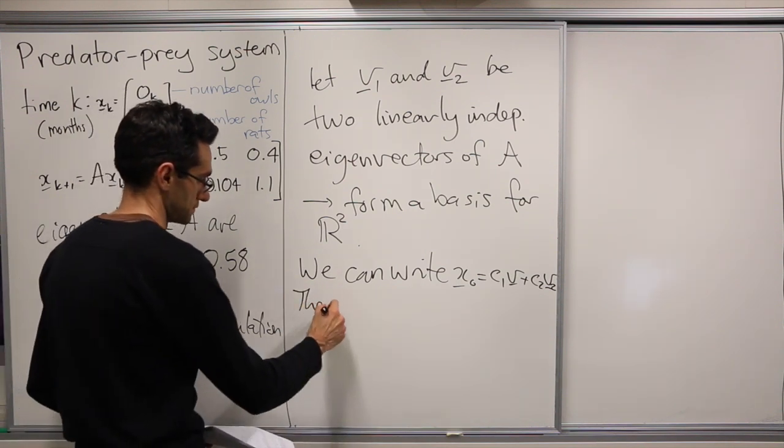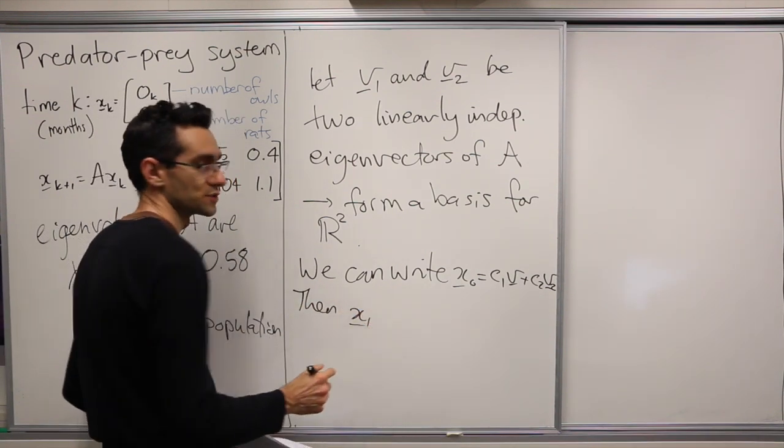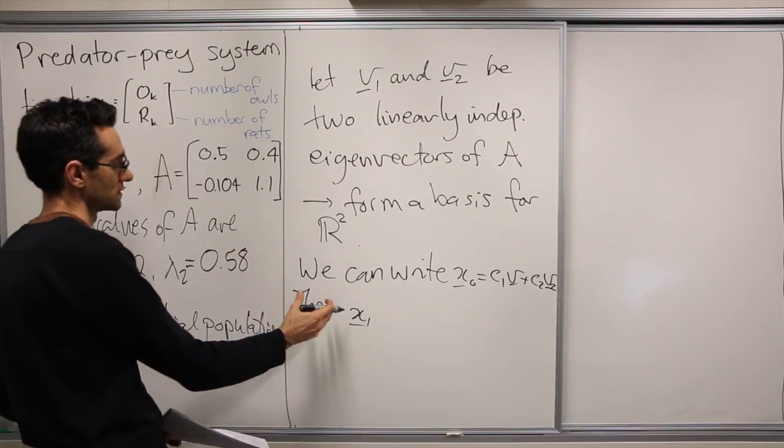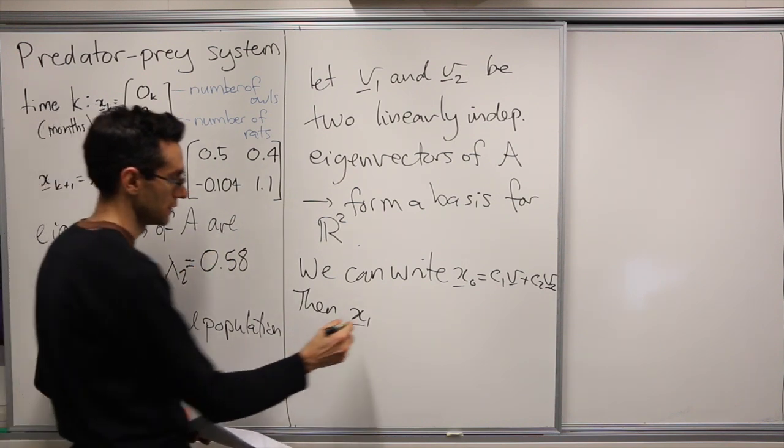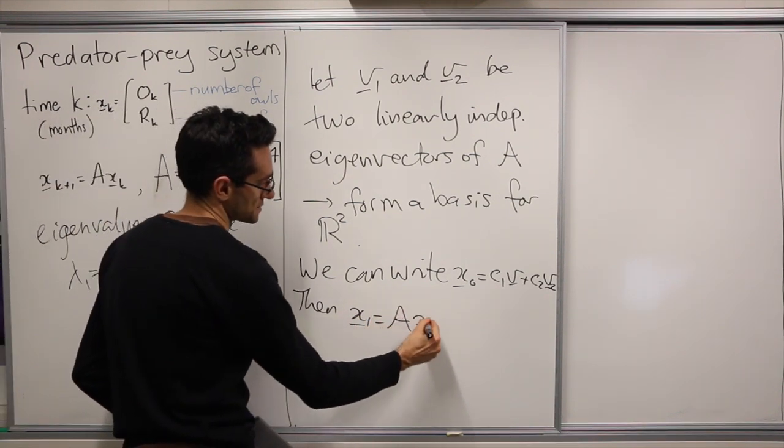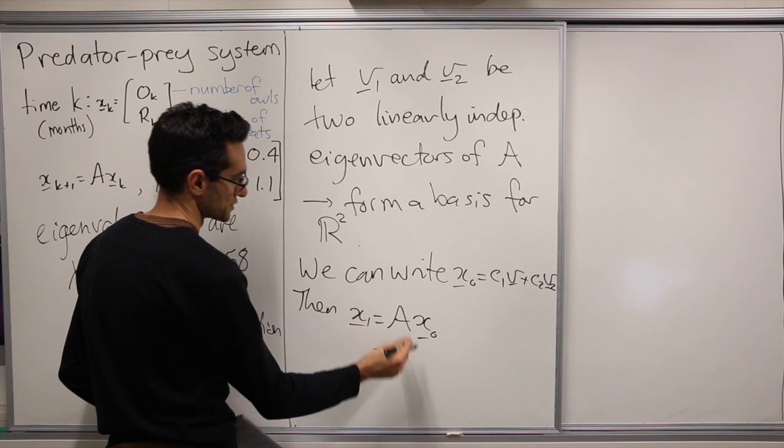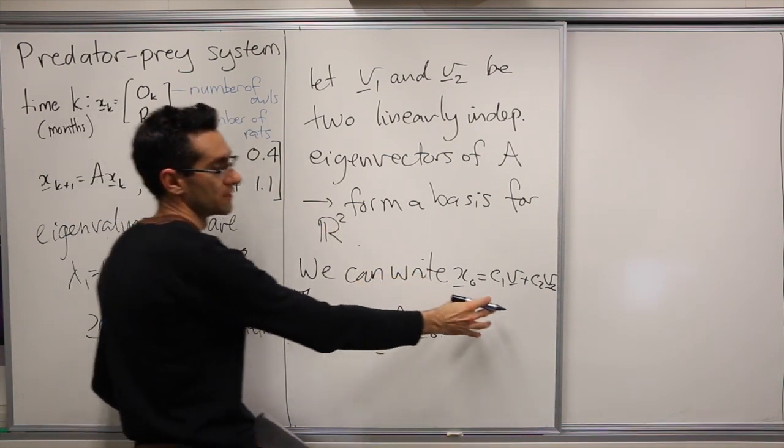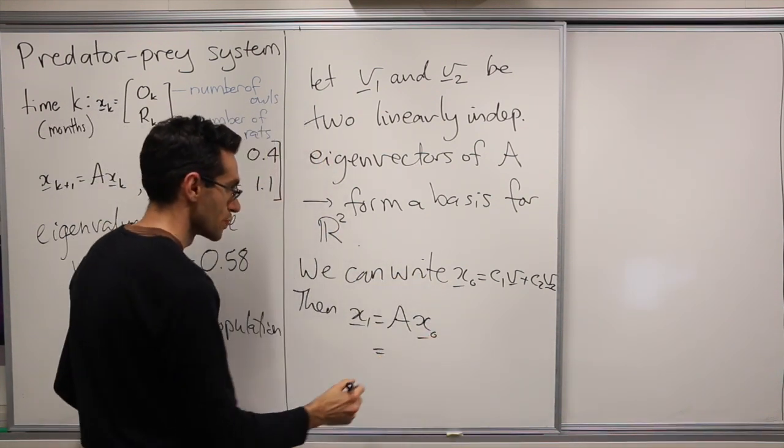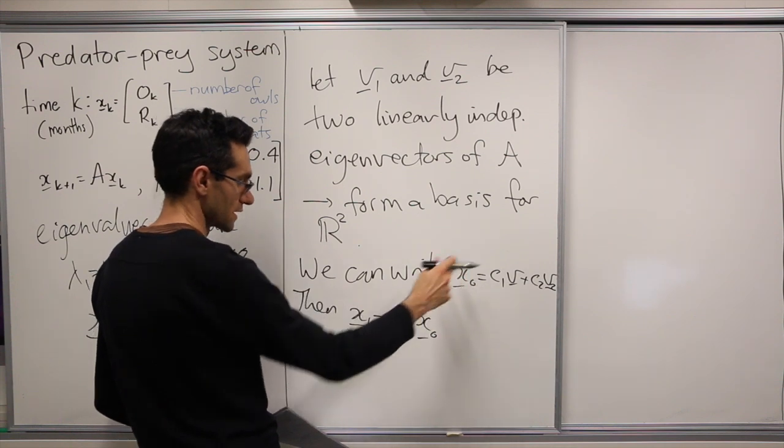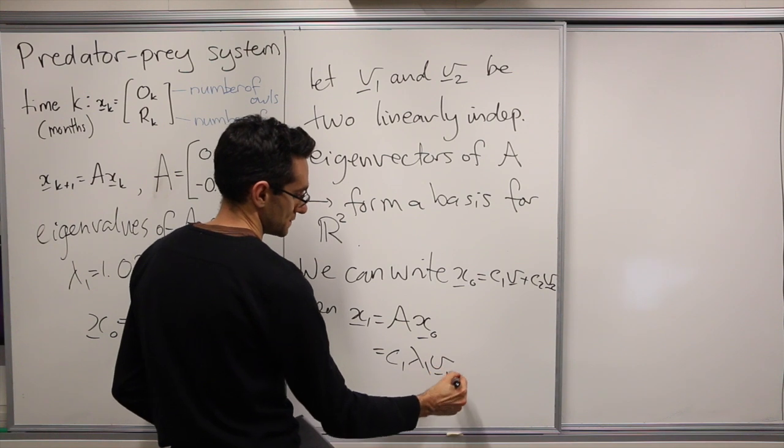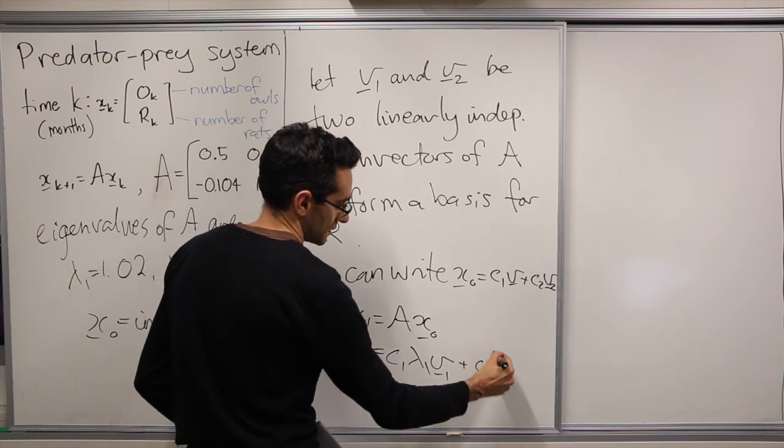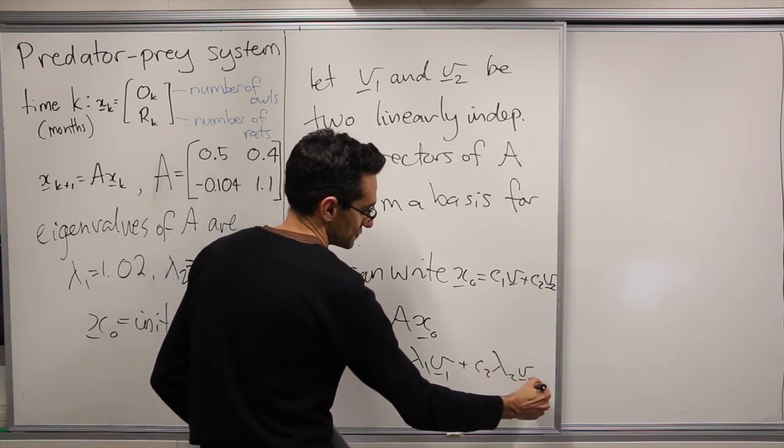Then x1, which gives the population at time k=1, is given by A times x0. We write out x0 in terms of the two eigenvectors, and remembering they're eigenvectors, this is c1·lambda1·v1 + c2·lambda2·v2.